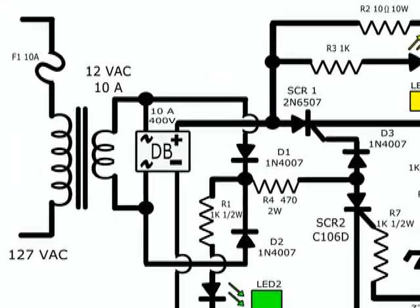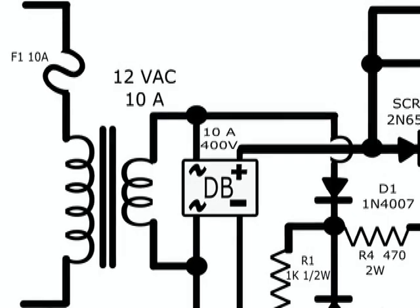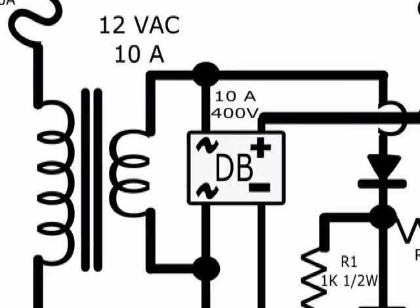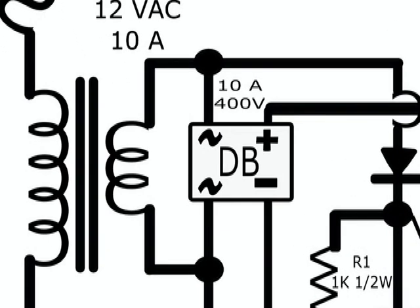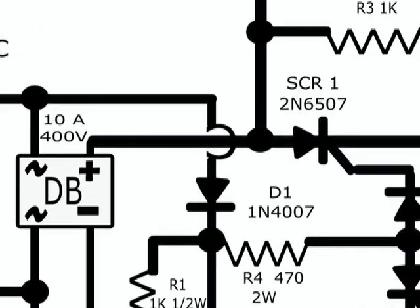That being said, I will say that the AC current enters the primary winding of the transformer through the 10 amp fuse F1. Approximately 12 volts of AC current comes out of the secondary winding of the transformer and are rectified by the diode bridge DB.